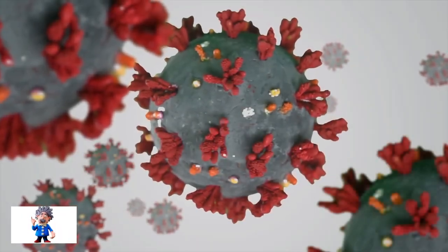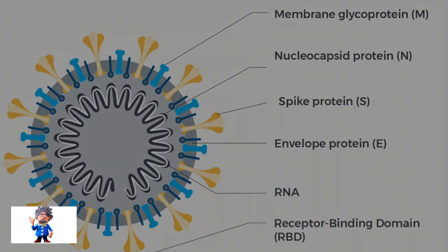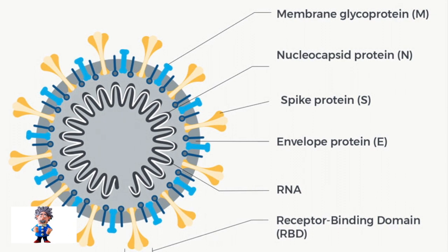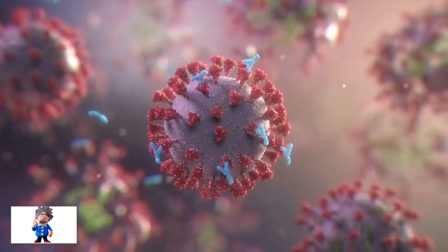It is important to remember that most of these mutations are actually found on the receptor binding domain of the spike protein. This is the very same place where the antibodies generated by the vaccines attach to.